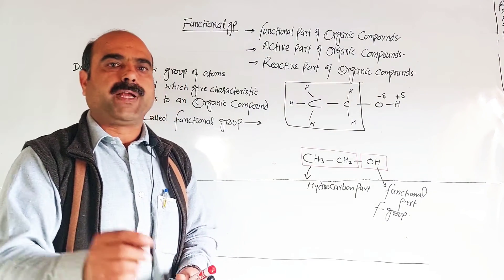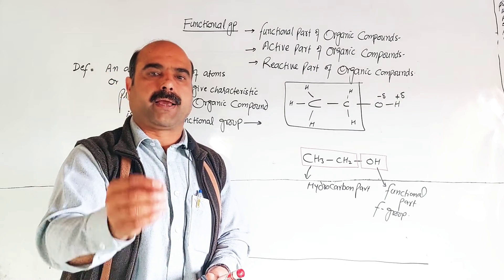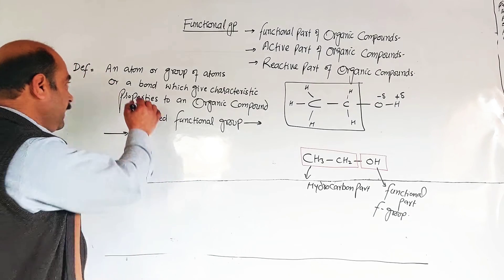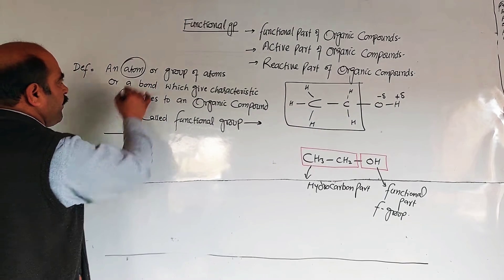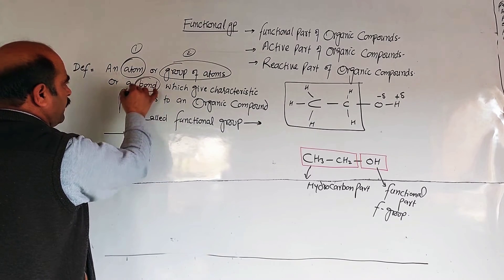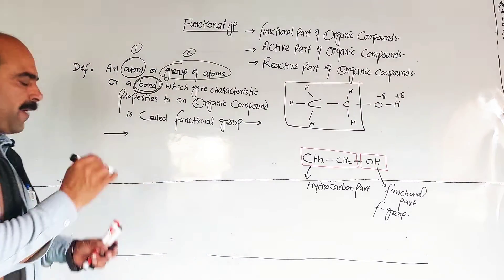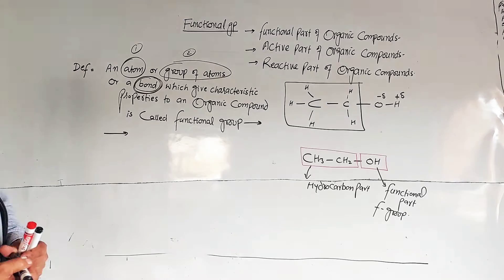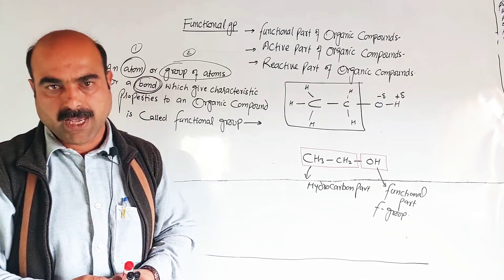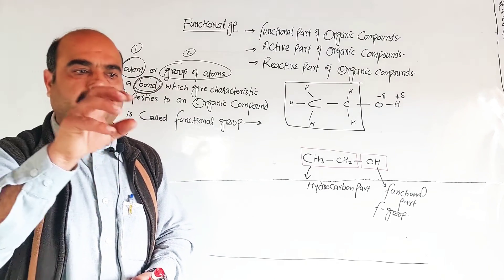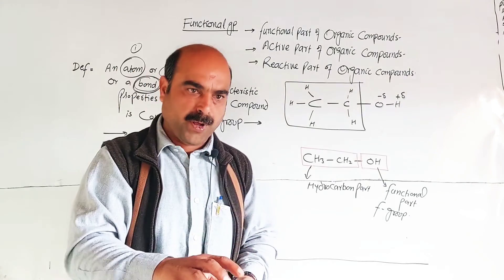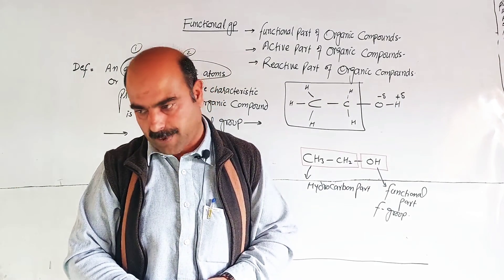The functional group determines the chemical reactivity of organic compounds. The atom, group of atoms, or bond gives organic compounds their specific chemical properties. Through the functional group, we can differentiate between different organic compounds.